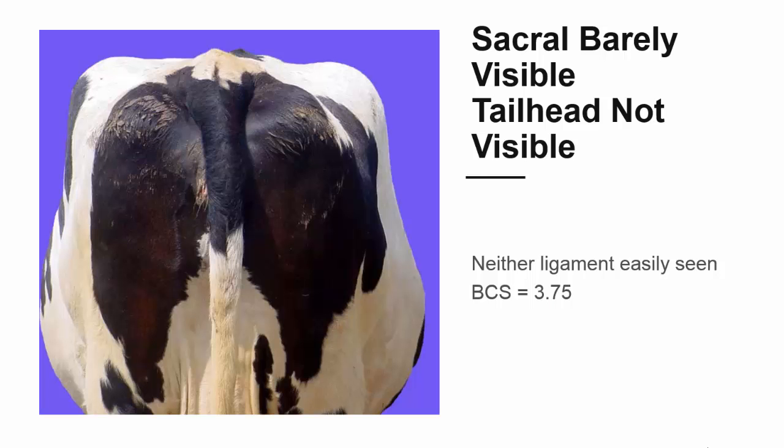With additional fat cover, the sacral ligament becomes less visible and the tail head ligament is completely obscured by fat. A cow like this scores 3.75.